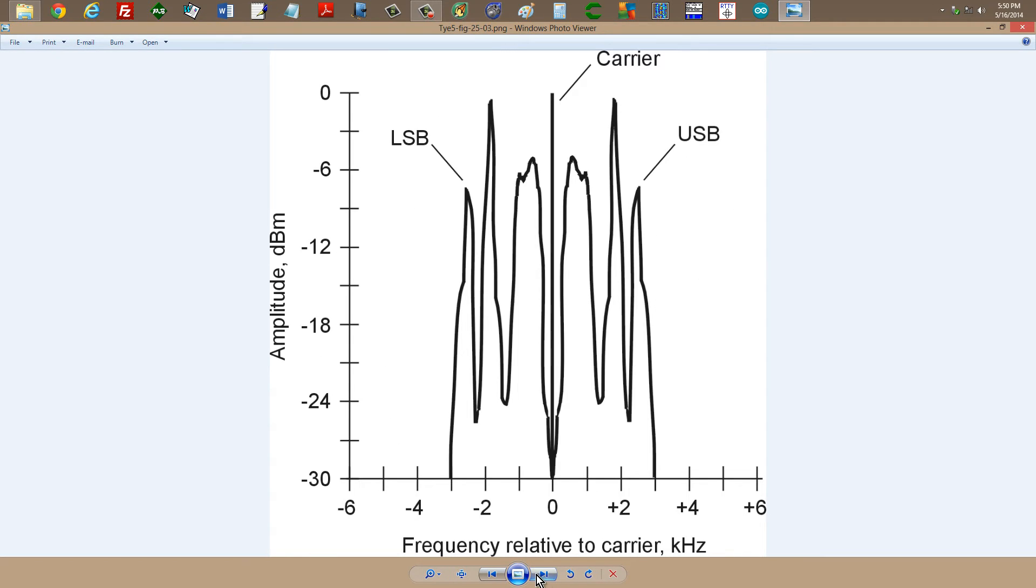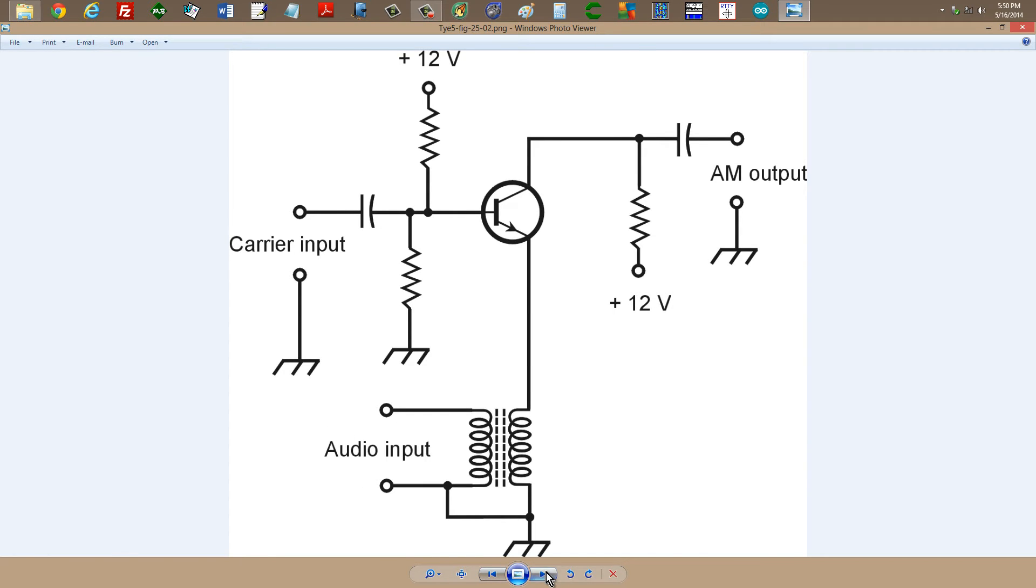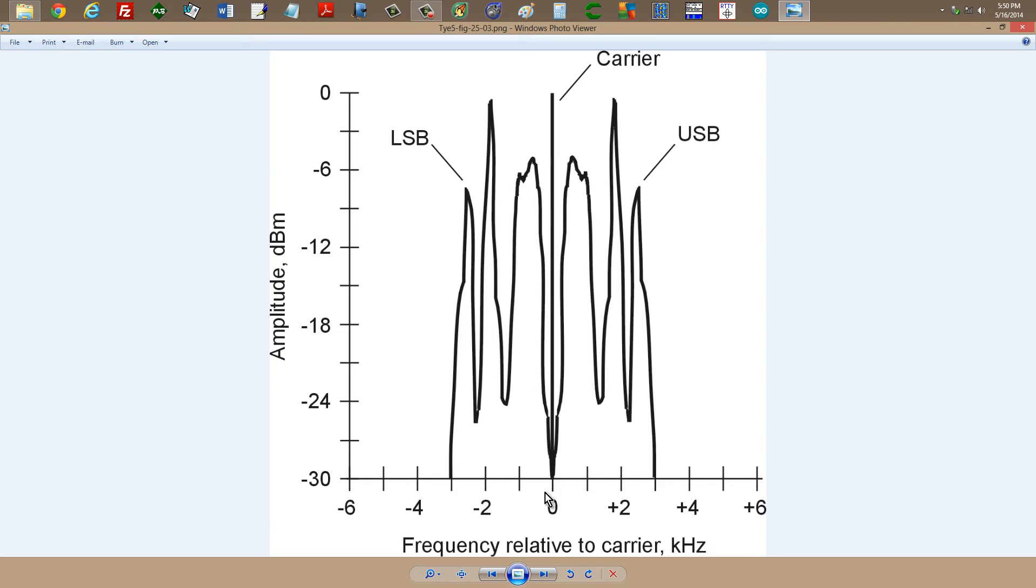And if you look at a spectral analysis of an amplitude modulated voice signal, you get something like this. Your carrier wave right at zero, that's the carrier frequency. Frequency relative to carrier in kilohertz. You normally would want to have an audio filter in your audio input circuit right here in order to keep the audio frequency energy below 3 kilohertz so that you get a total overall bandwidth of 6 kilohertz, up to 3 kilohertz for the upper sideband and 3 kilohertz for the lower sideband. That's how you get an amplitude modulated signal and that is what it looks like on a spectrum analyzer display.